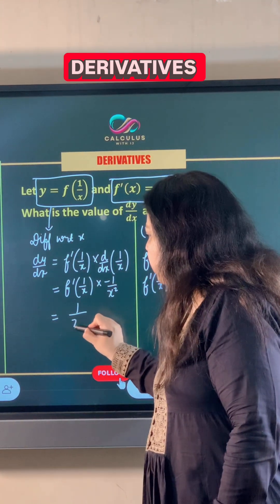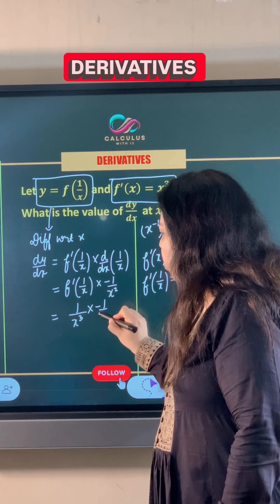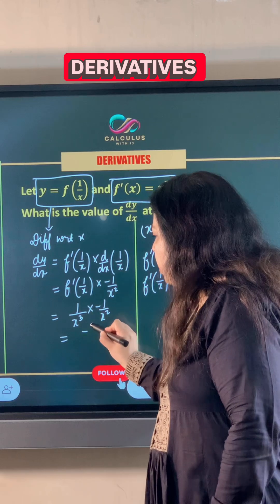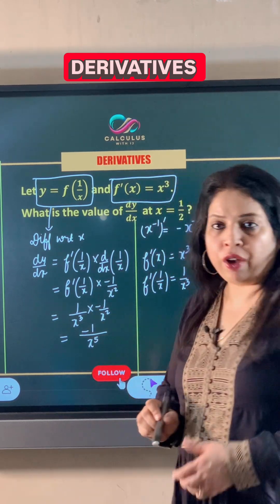So this becomes 1 upon x cubed multiplied by minus 1 upon x squared, which is negative 1 upon x to the power 5.